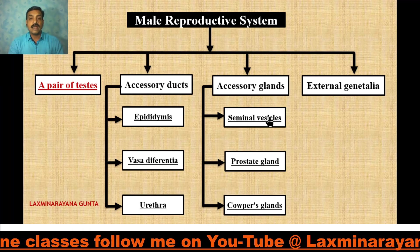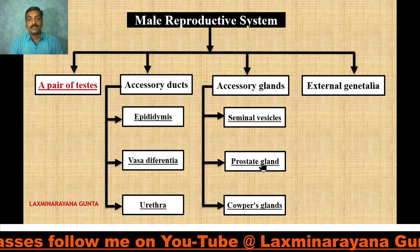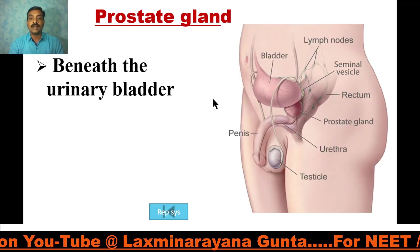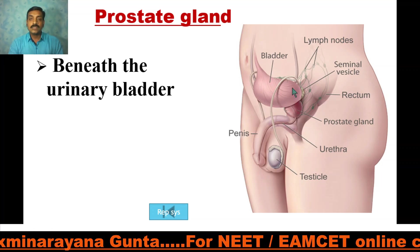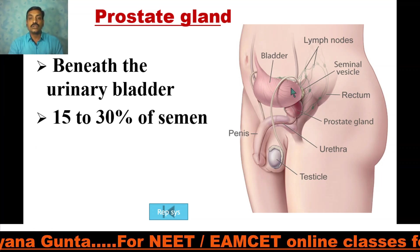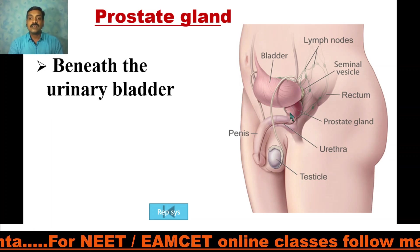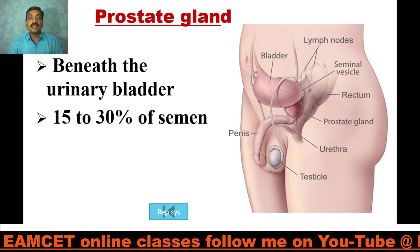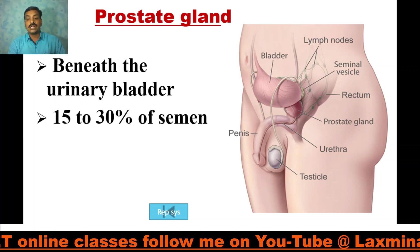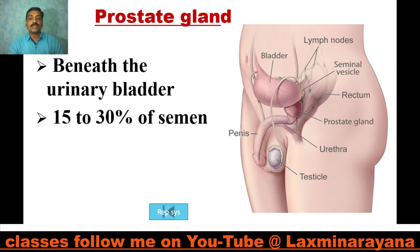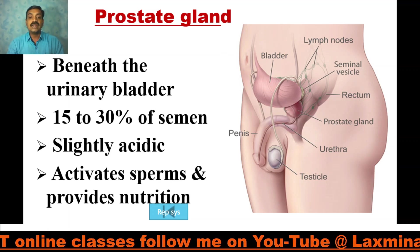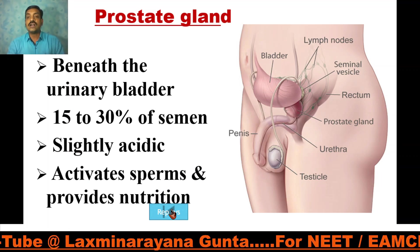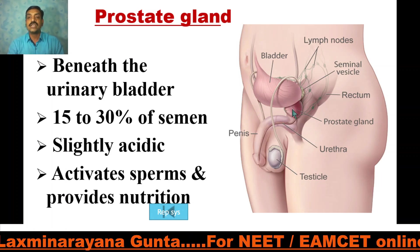The prostate gland is an unpaired gland. Its secretions account for 15 to 30 percent of the semen. It is slightly acidic and activates the sperms and provides nutrition to the sperms. The most common cancer in human males is prostate cancer.